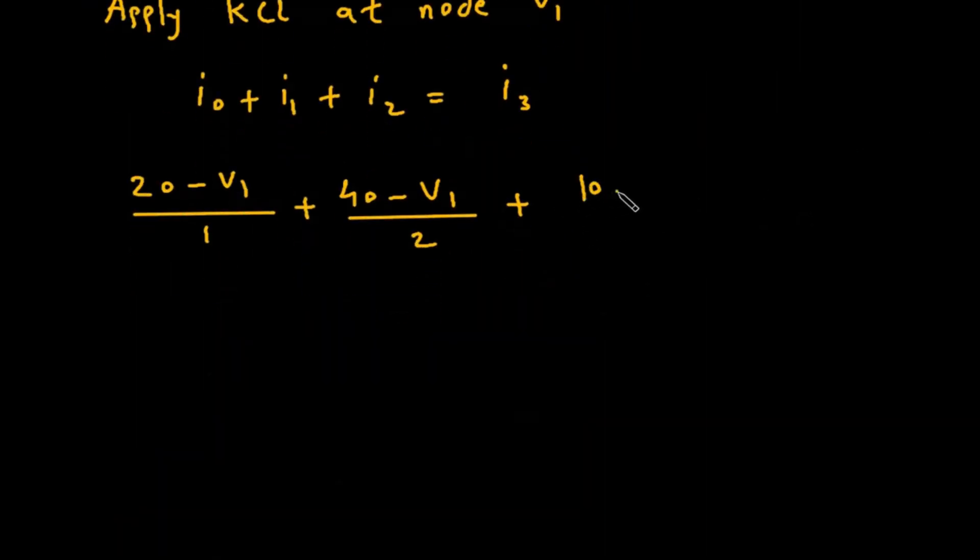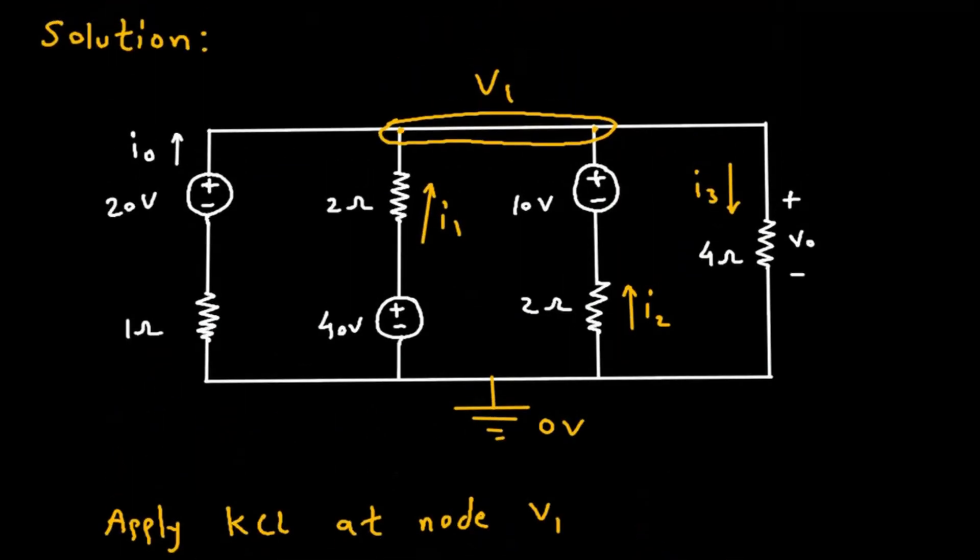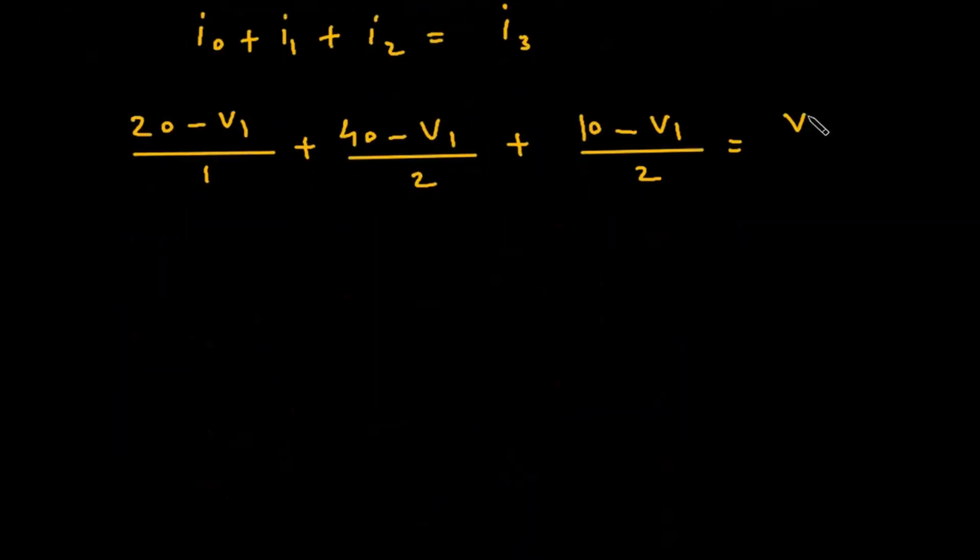This equals I₃, which is (V₁ - 0)/4, or V₁/4.